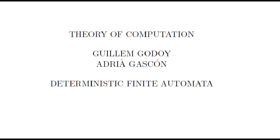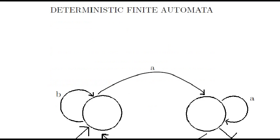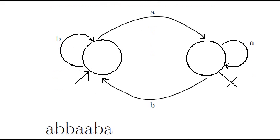The goal of this lecture is to introduce deterministic finite automata. Let's start with an example. A deterministic finite automaton has states that will be denoted with circles. In this case we have two states.